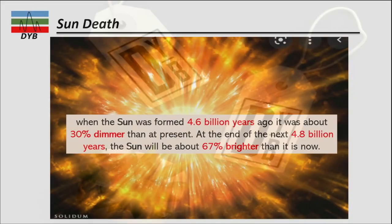Now we look at the sun's death — when do you think the sun is going to die? The sun was formed about 4.6 billion years ago and was actually 30 percent dimmer than it is today. In the next 4.8 billion years, the sun will be about 67 percent brighter than it is today. When it becomes brighter and brighter, with more activities and magnetic storms, that will probably lead to the death of the sun. You can comment in the section below about when you think the sun is going to die.